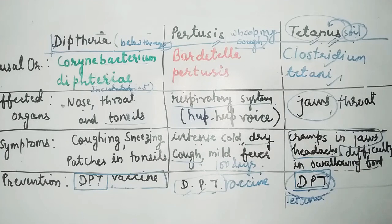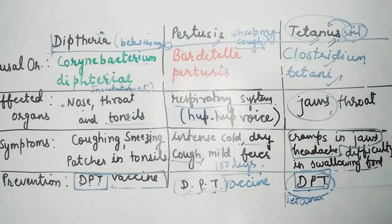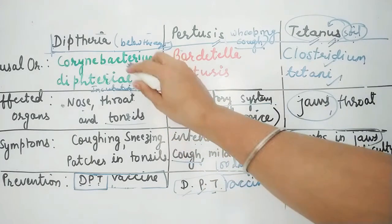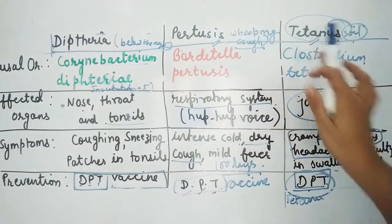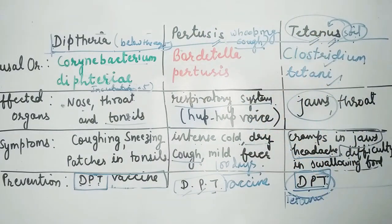Okay, so here we have four bacterial diseases: first was tuberculosis, and now diphtheria, pertussis, and tetanus. Okay students, thank you.